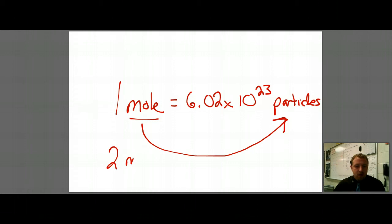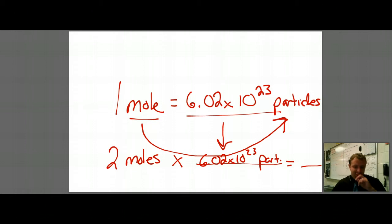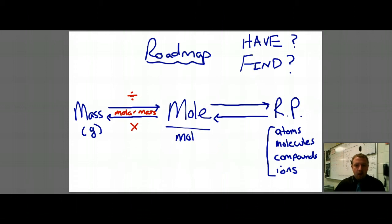So if I had two moles, I would multiply by this number here. And that would give me my answer. So if I'm going from moles to particles, I multiply. So if we go back here, if I'm going from moles to particles, I'm going to go ahead and multiply. If I'm going from particles to moles, I'm going to do just the opposite. I'm going to divide.